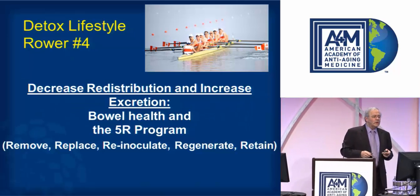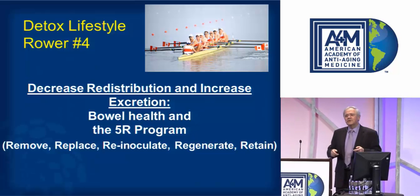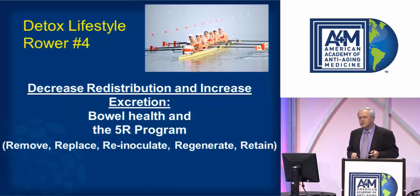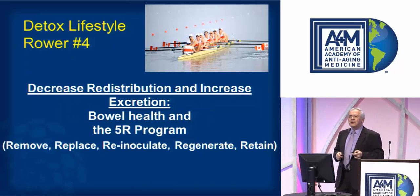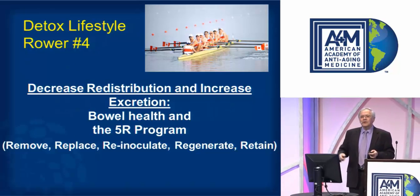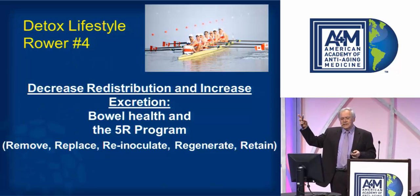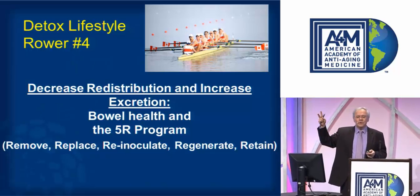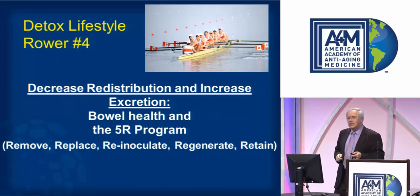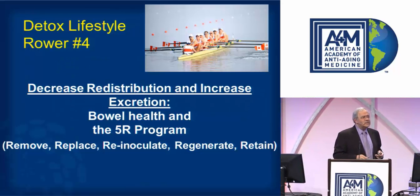Rower number four on your Detox Lifestyle Gold medal team: we want to decrease the redistribution of toxicants and increase excretion. We do this through the bowel health program, or the 5R program, which involves removing things that shouldn't be in the gut, replacing things we're short of, re-inoculating with friendly bacteria to repair or regenerate, and retaining what we gain.